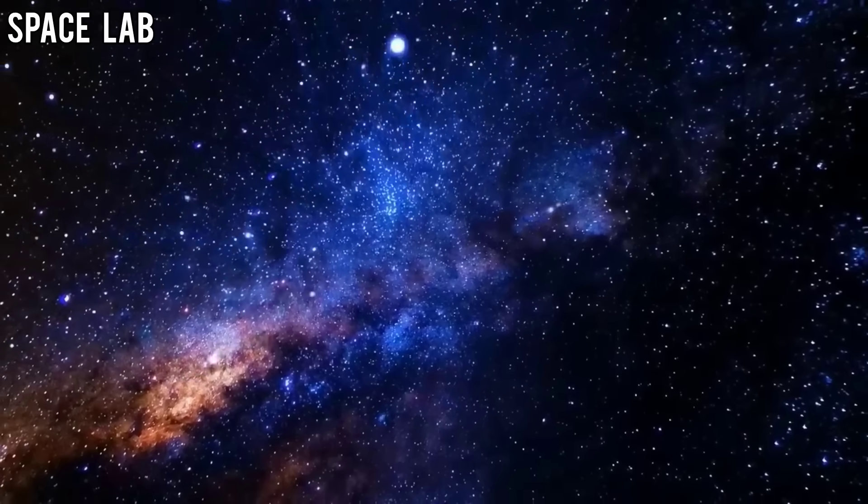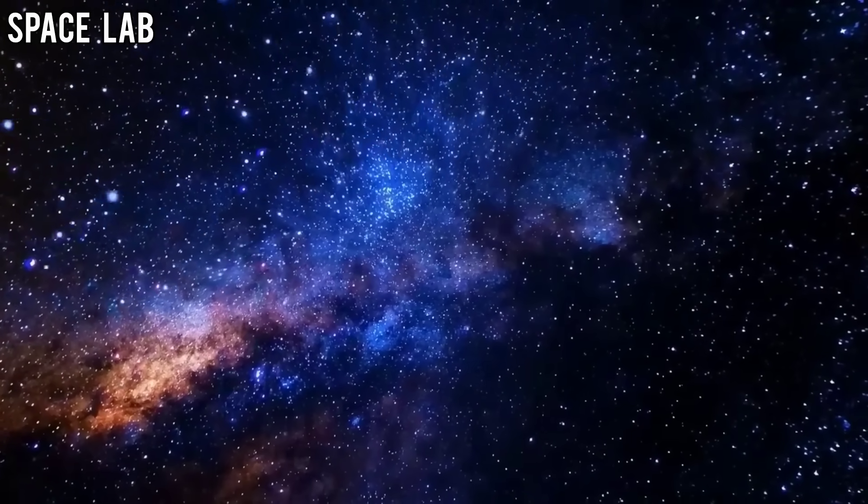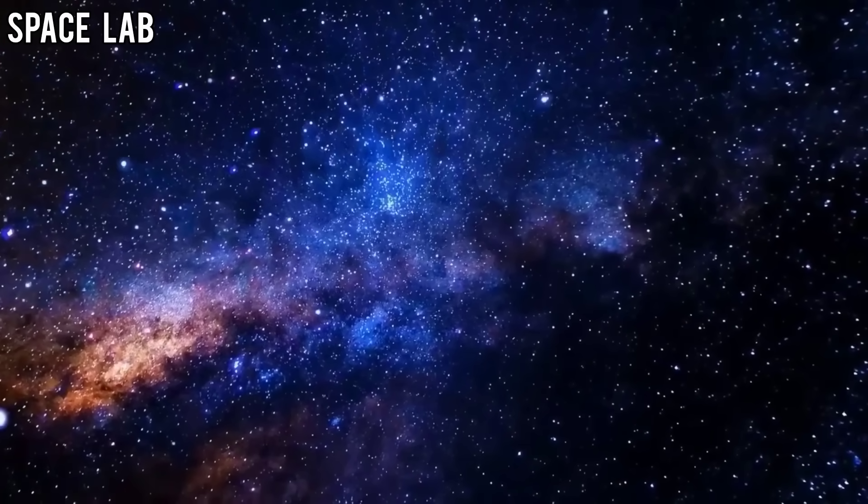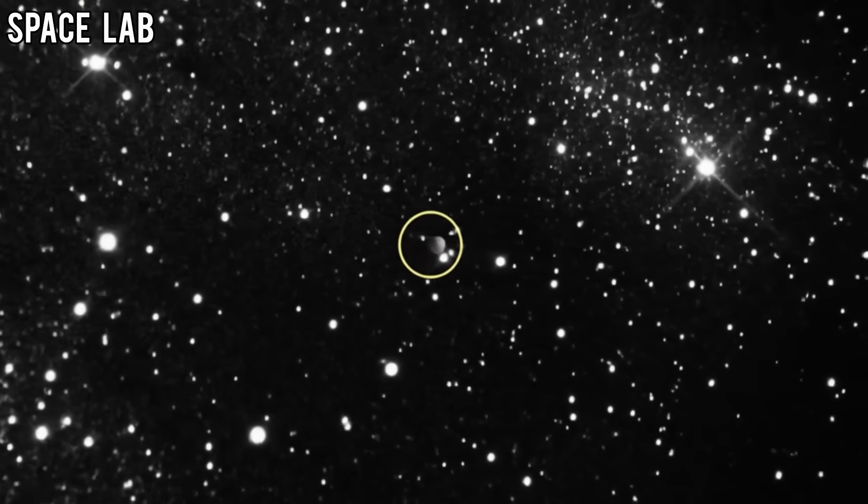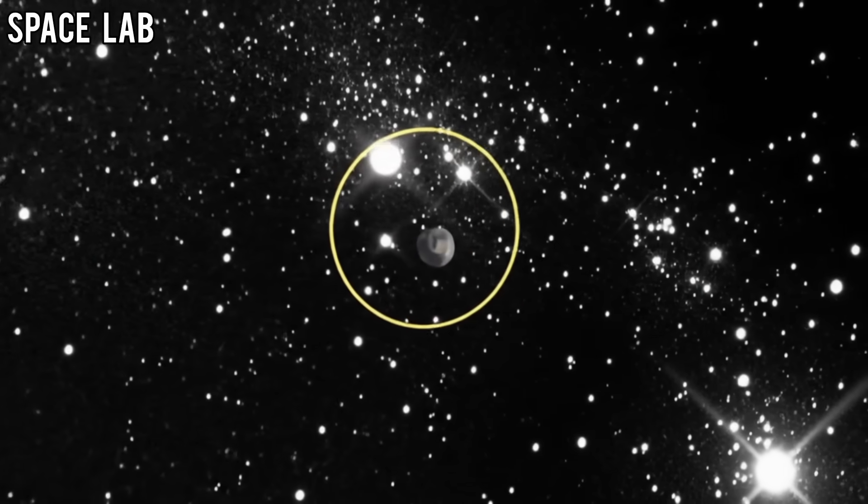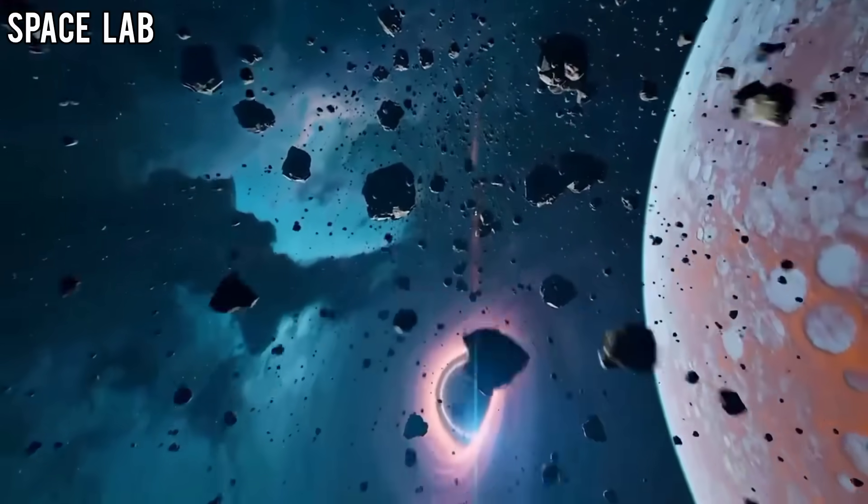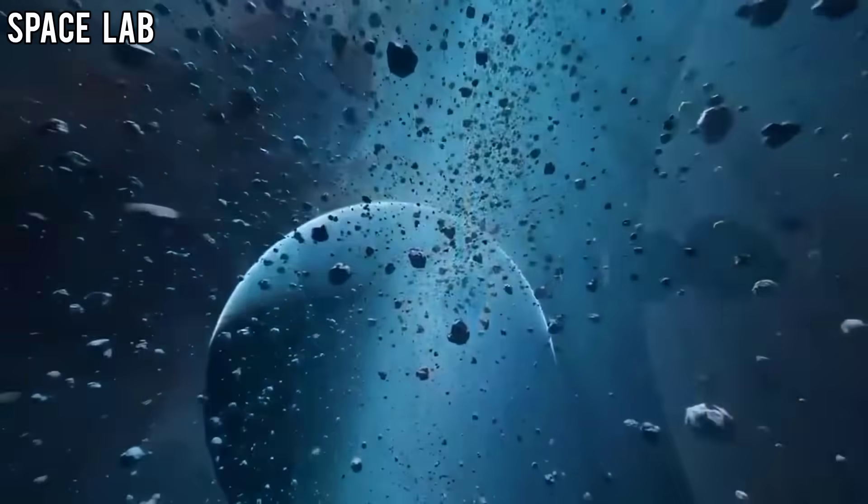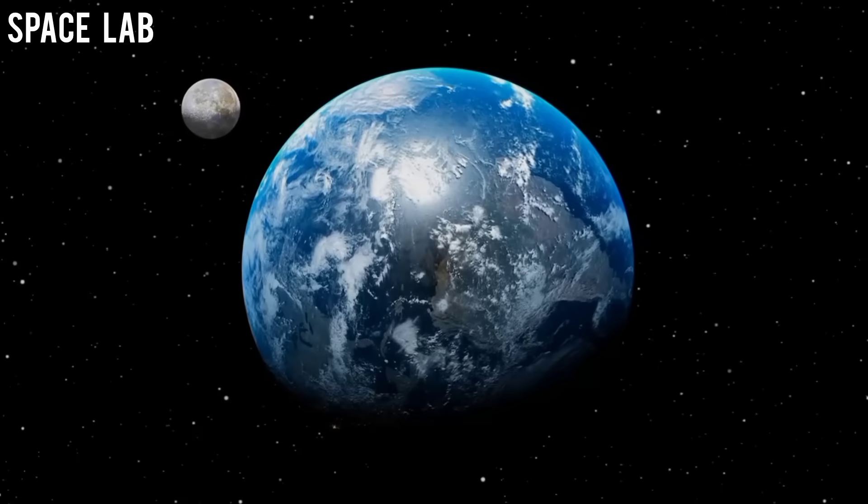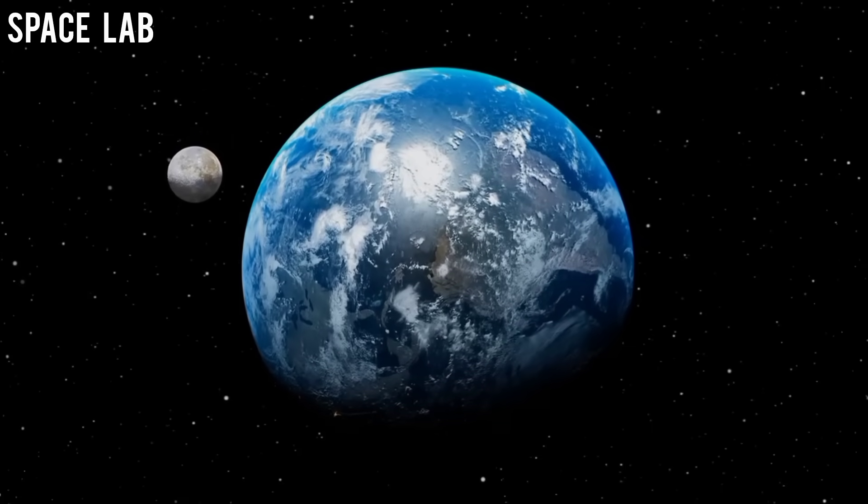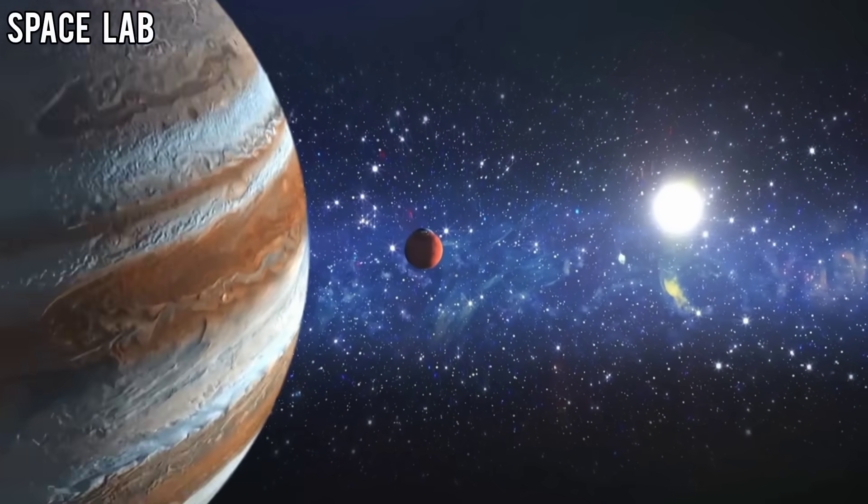For weeks, ATLAS's sensors had been returning routine data. Small asteroids passing harmlessly by Earth, meteor trails, and cosmic dust. But then, 31/ATLAS, one of the catalogued objects tracked by the system, suddenly produced a signal that no one expected. Unlike a simple visual observation, this time, the instruments detected something that looked like a radio transmission, structured, pulsed, and carrying a repeating pattern.